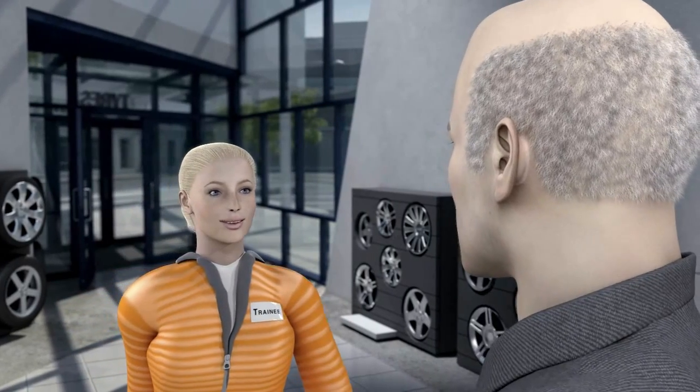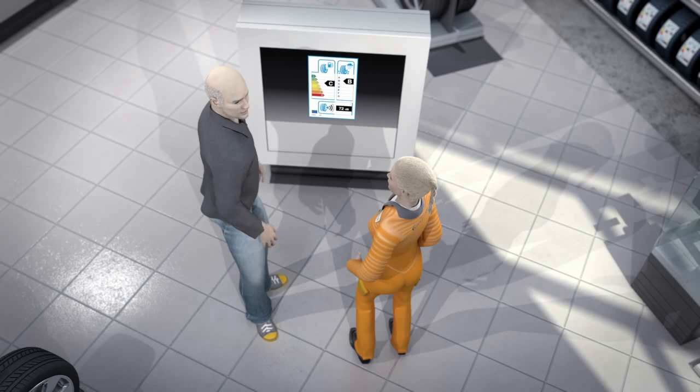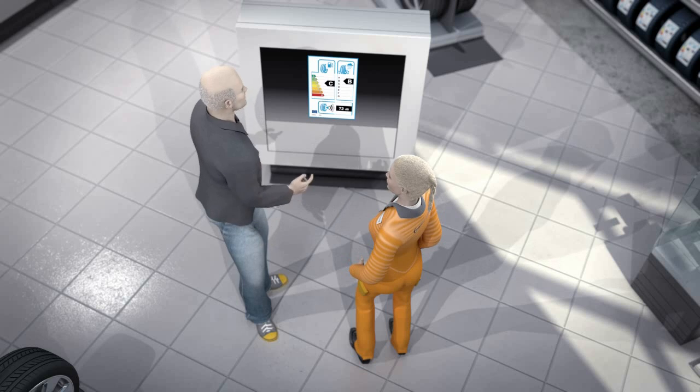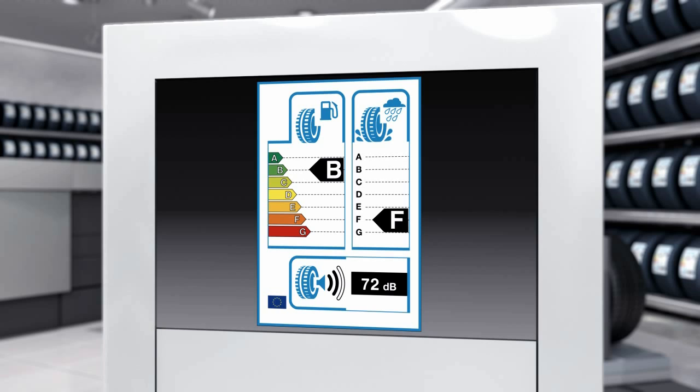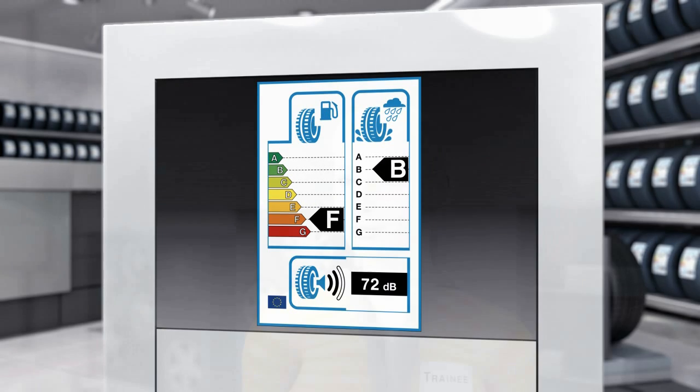The tyre retailer explains to Tina the information shown on the new EU tyre label and which individual characteristics it addresses. The label focuses on three key characteristics of a tyre: energy efficiency, tyre grip on wet roads, and the intensity of the pass-by noise. For the first two criteria, A is the best mark. For pass-by noise, the absolute value is given in decibels.